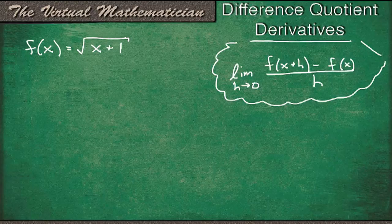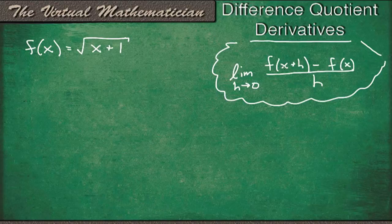So to do this, we're going to want to take the limit as h goes to 0 of f of x plus h minus f of x all divided by h.